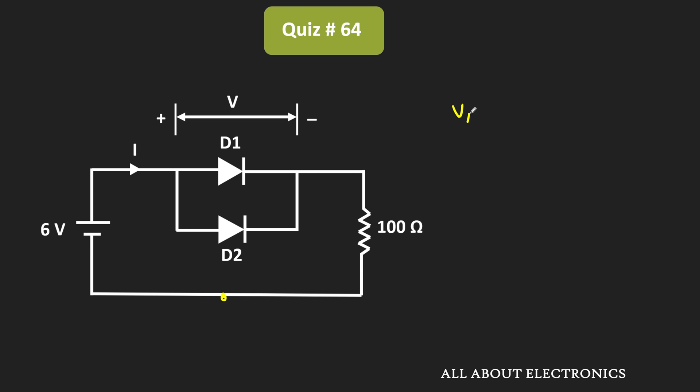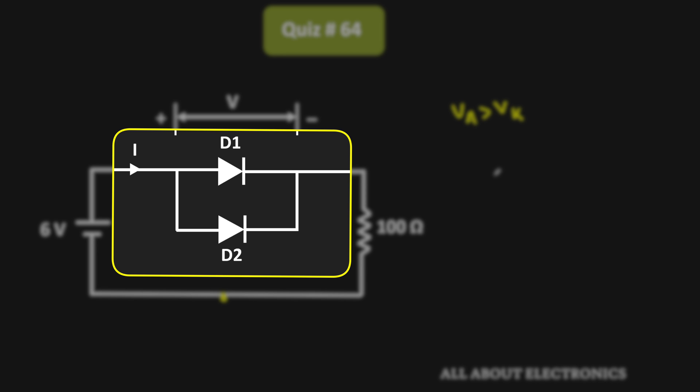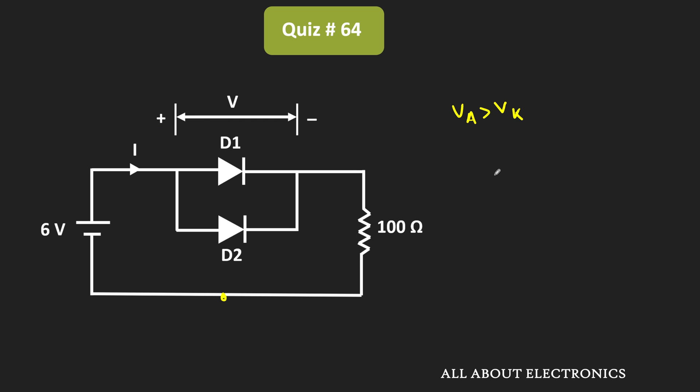Since the anode voltage is greater than the cathode voltage, both diodes should conduct. However, when two diodes are connected in parallel, the diode with the lower cut-in voltage will turn on first.